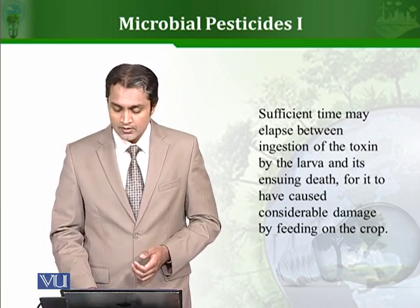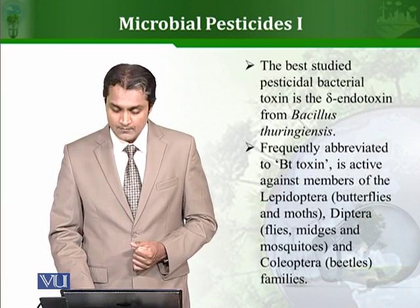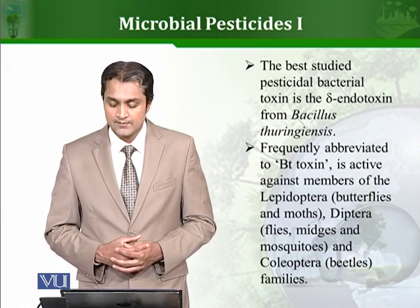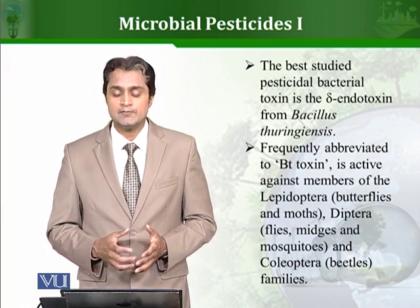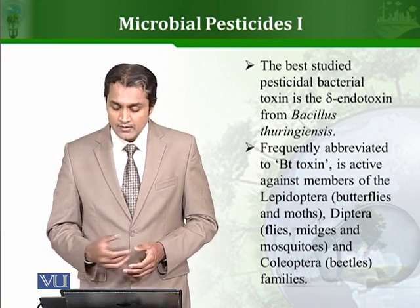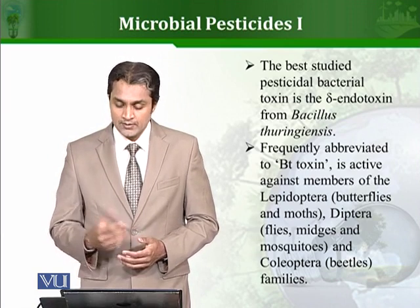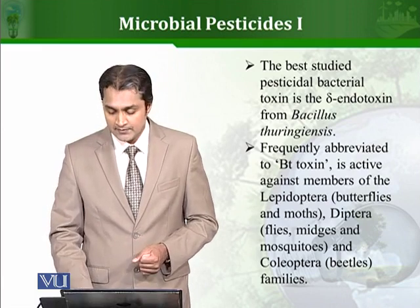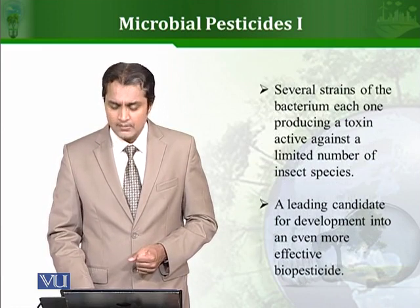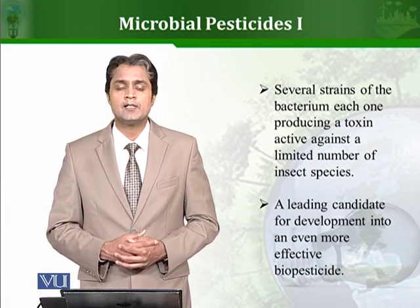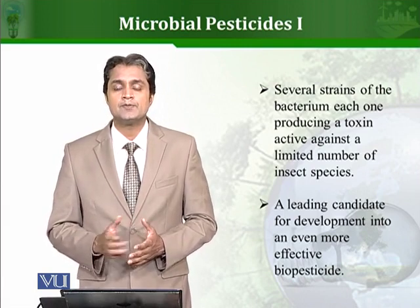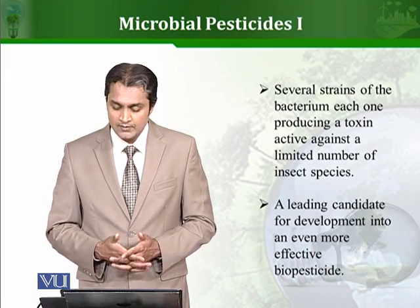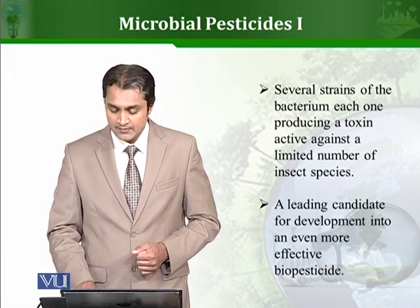The best-studied example of a microbial pesticide is the Bt toxin, the endotoxin from Bacillus thuringiensis. It is viable and highly active against so many different pests, which can cause so much damage to plants. This endotoxin of Bacillus thuringiensis, commonly called Bt toxin, has been observed to be active against many different pests. Different strains of this bacteria also produce many variants of this toxin which can be used against other pests as well, making this organism perhaps the leading candidate in this area of research.